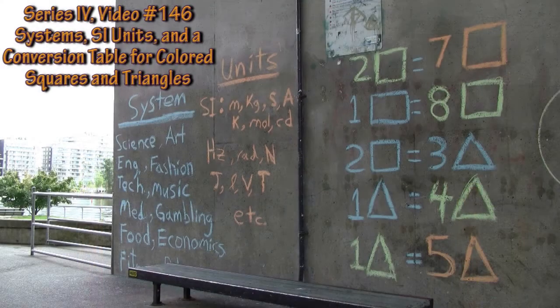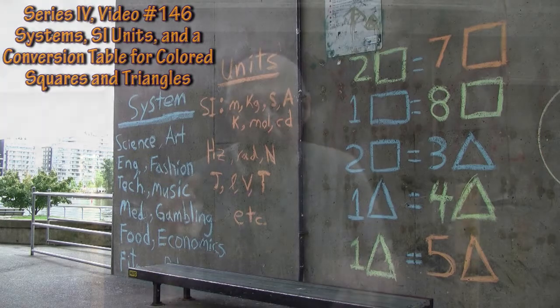We're not going to work through all of those systems just to learn this method, and we're not going to talk about one specific system, because there are so many. Instead, we're going to use the system we set up: the world of color squares and triangles, and the connection we built between those two worlds.